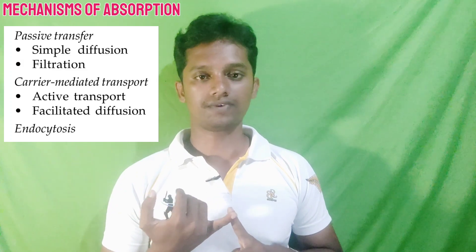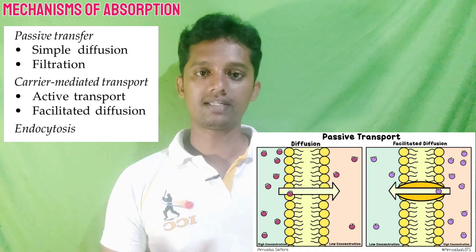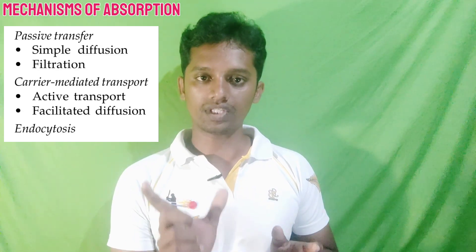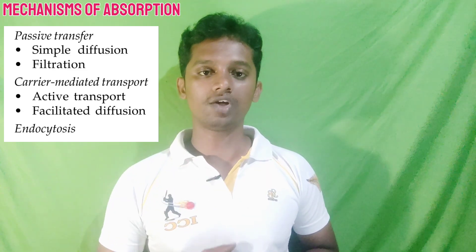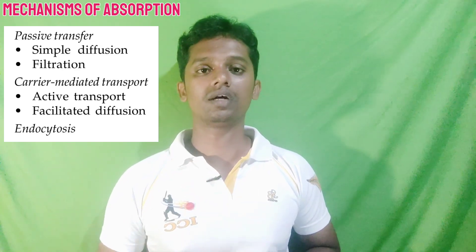Lipid-soluble drugs can very easily cross the cell membrane, but water-soluble drugs cross differently. To understand how both types of drugs pass, there is a mechanism of absorption. There are three categories: the first is passive transfer, the second is carrier-mediated transport, and the third is endocytosis. These are the three major mechanisms of absorption.